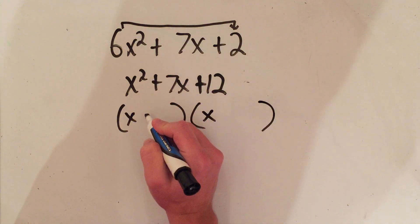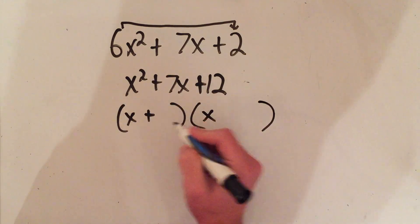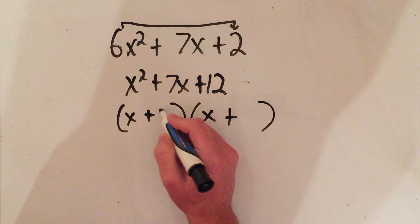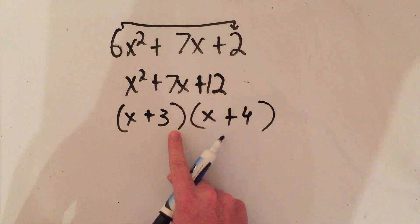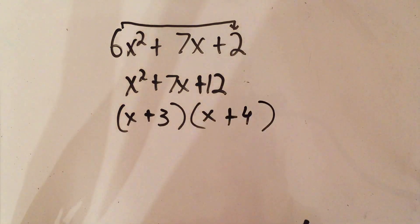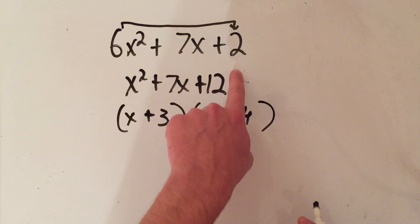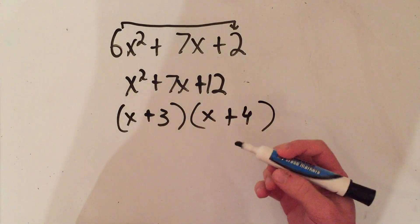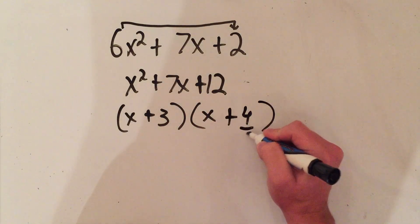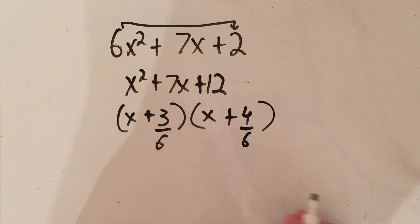And we already looked at those, but it's going to be 3 and 4, right? 3 times 4 is 12, and 3 plus 4 is also 7. Okay, here is the trick: this 6 that we slid over - that was the slide - now we have to divide. Slide and divide. Dividing those two numbers by 6.